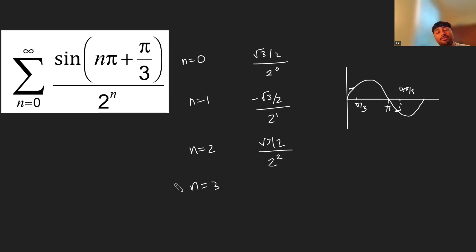Similarly, when n equals 3, when we plug in n is 3 we get 3 pi, but 3 pi is essentially the same as 1 pi. And so we're going to get minus root 3 over 2 on the top, divided by 2 cubed.